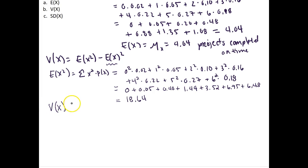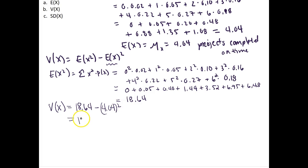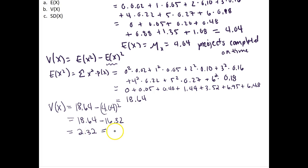So the variance of x is equal to 18.64 minus the expectation of x squared. We found the expectation of x to be 4.04, so if we square this, this is equal to 18.64 minus 16.32, which is altogether equal to 2.32. That is the variance of x, also written as sigma squared x.